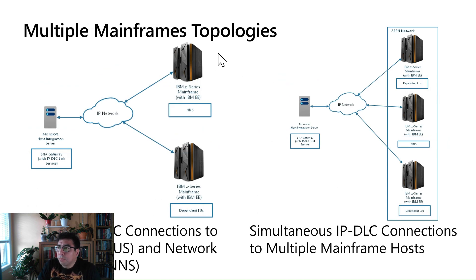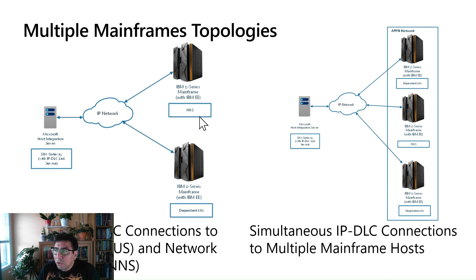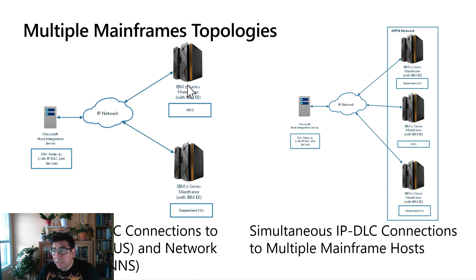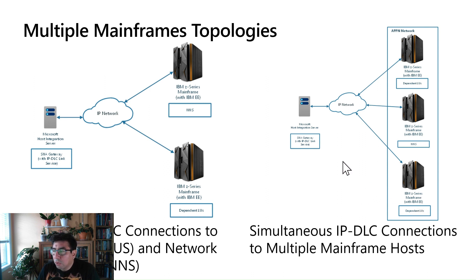What about multiple mainframe topologies? In the case of multiple mainframes, we don't require any server in the middle, no intermediary, no broker. We can go directly to them as long as you follow one of these topologies. You can have a network node server that identifies and reroutes requests in the APPN network, with one mainframe fulfilling that capability and another mainframe focused on having the dependent LUs to provide application services. You can have more mainframes with simultaneous IP DLC connections to multiple mainframe hosts, where you have the LUs in one place, the NNS in another, and more LUs in another place. HIS is always connecting directly to the mainframe or mid-range.